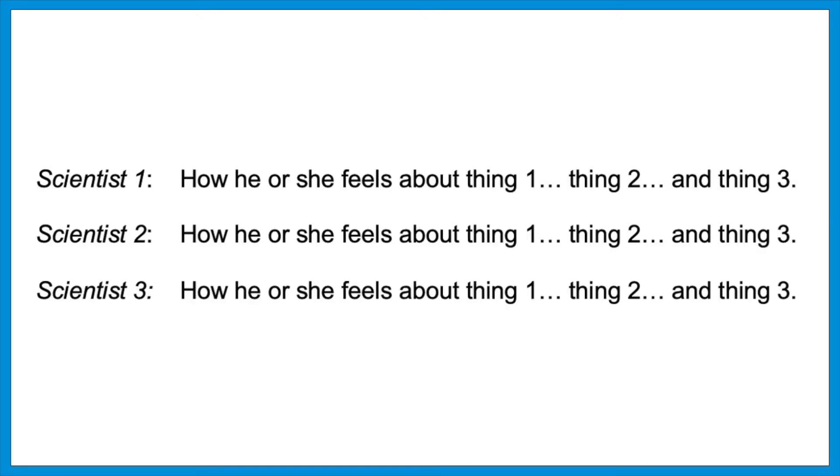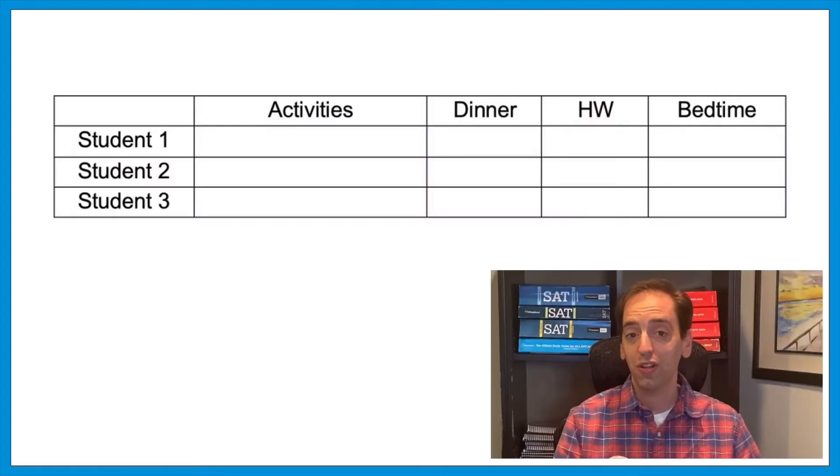Now, will the real science passages be that silly? No, but they will follow that same structure. The conflicting viewpoints passages will usually boil down to this type of format: scientist 1 and how he or she feels about thing 1, thing 2, and thing 3 — and that'll be echoed with scientist 2 and scientist 3. They'll cover the same points and roughly in the same order. It's difficult to decipher all of that information when it appears as dense text in paragraph form, so a great strategy is to turn all of that boring data into a visual. You can make a quick chart in your test booklet — it doesn't need to be fancy.